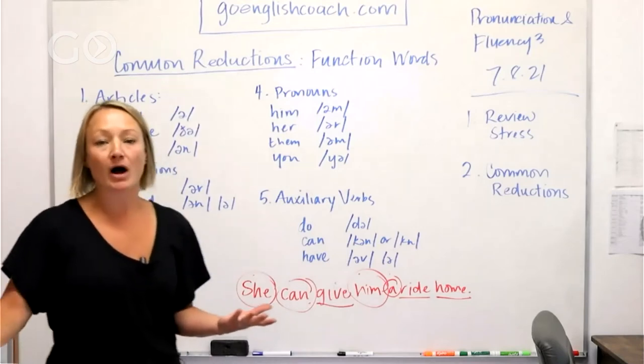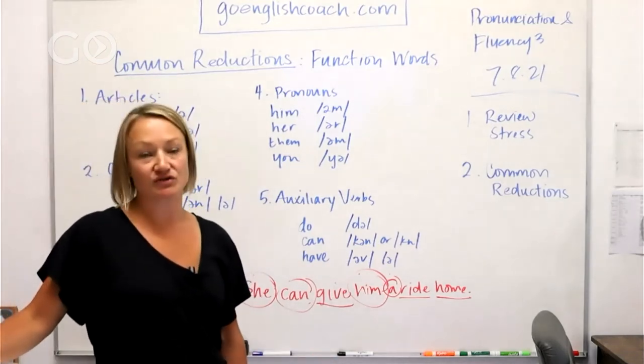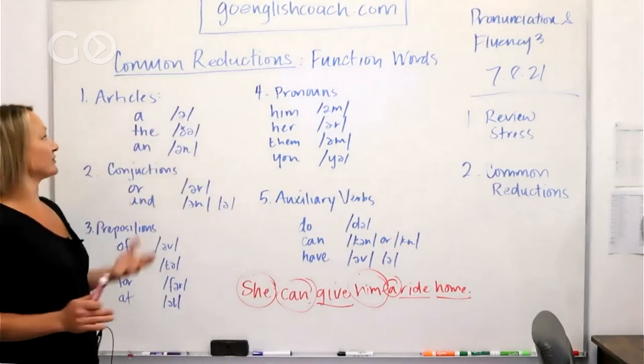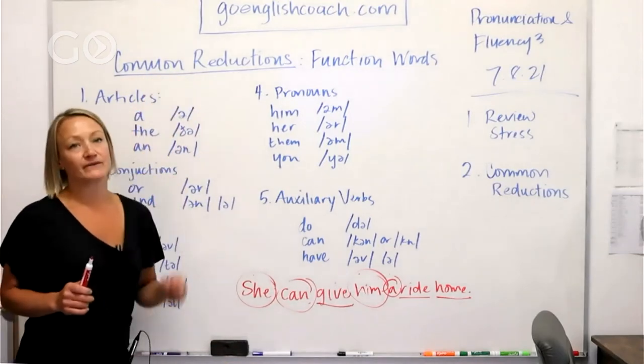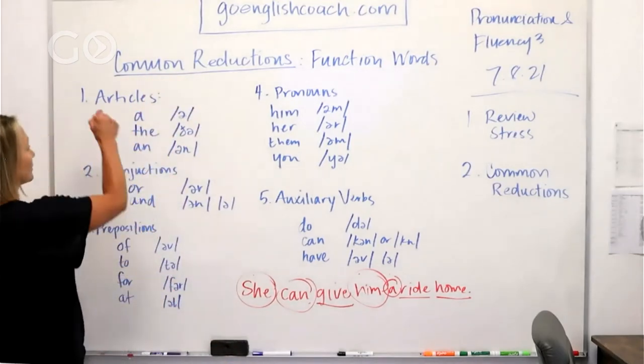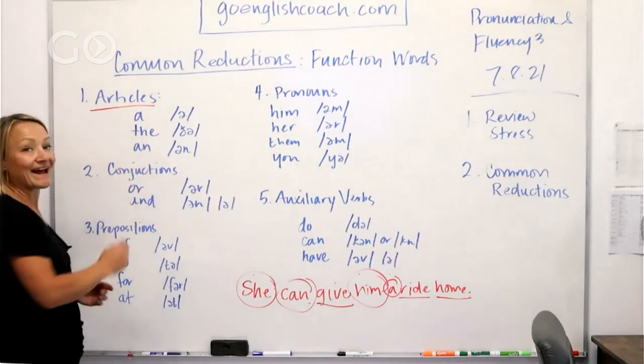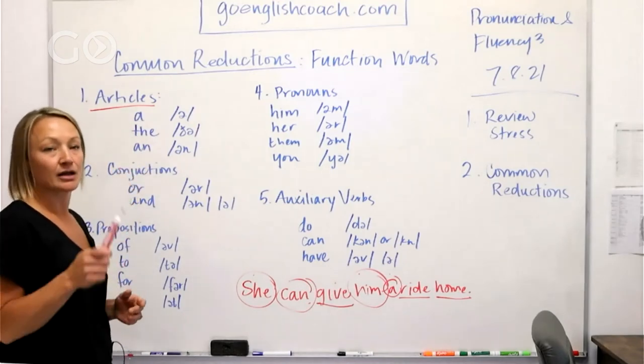So then we say, well how do we know which words we are supposed to reduce? Okay, here is the rule: in general we reduce function words. So words like articles - the and an.